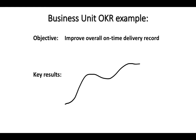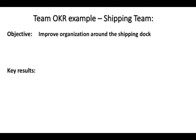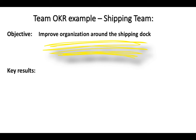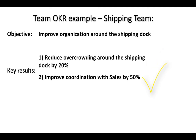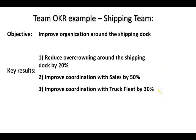The key results for this objective aren't pertinent to this video and just add complexity, so let's skip over those. Let's jump to a specific example of a team OKR that spawned from the business unit level OKR. The shipping team believes that in order to help the business unit improve its overall on-time delivery record, it should improve organization around the shipping dock. Some key results for this objective could be: 1) Reduce overcrowding around the shipping dock by 20%, 2) Improve coordination with the sales team by 50%, 3) Improve coordination with the truck fleet by 30%.